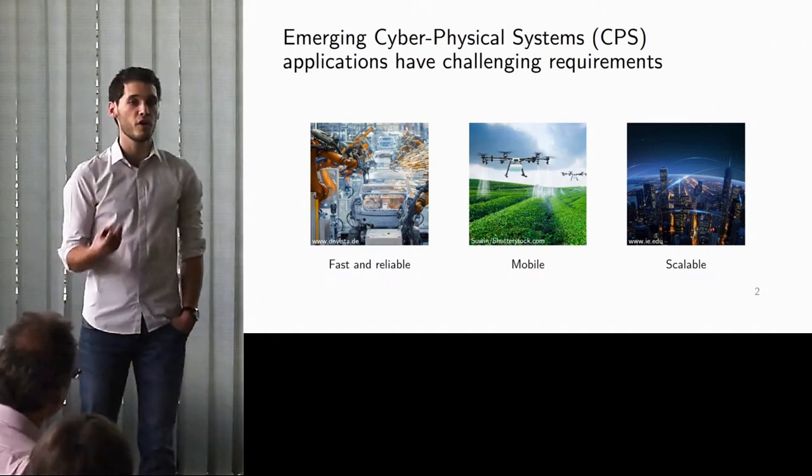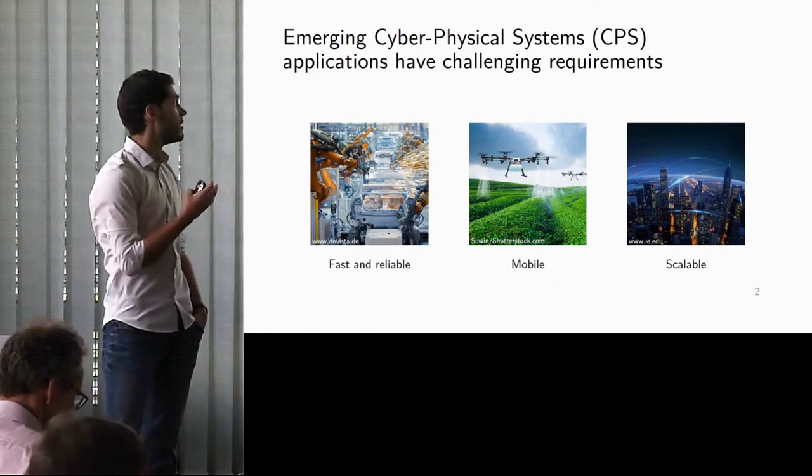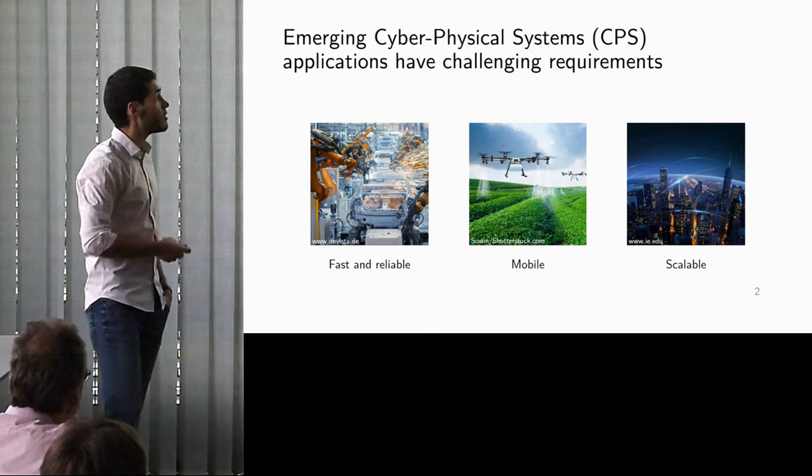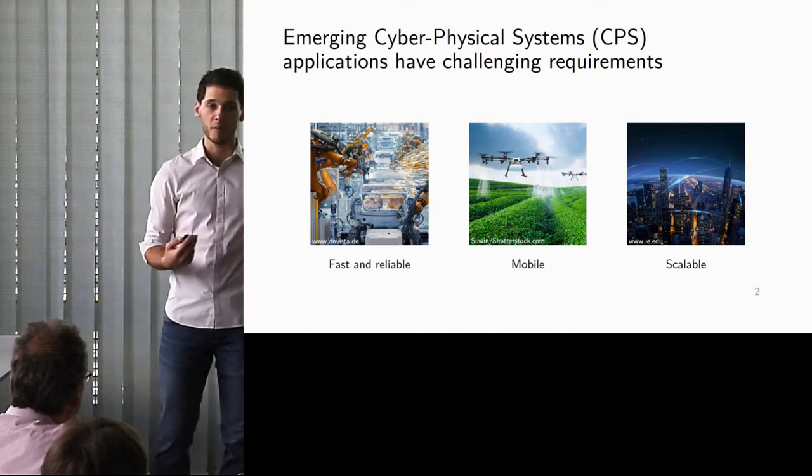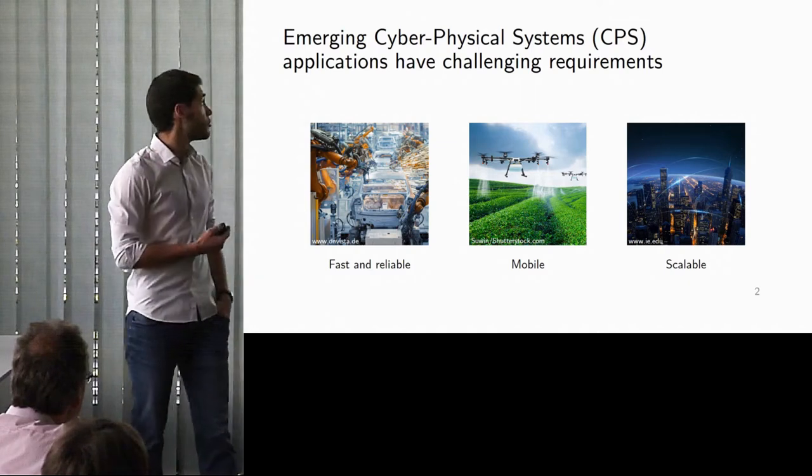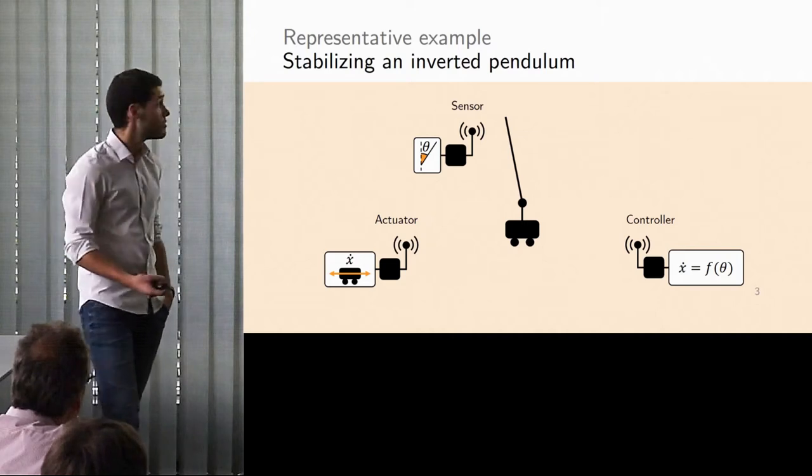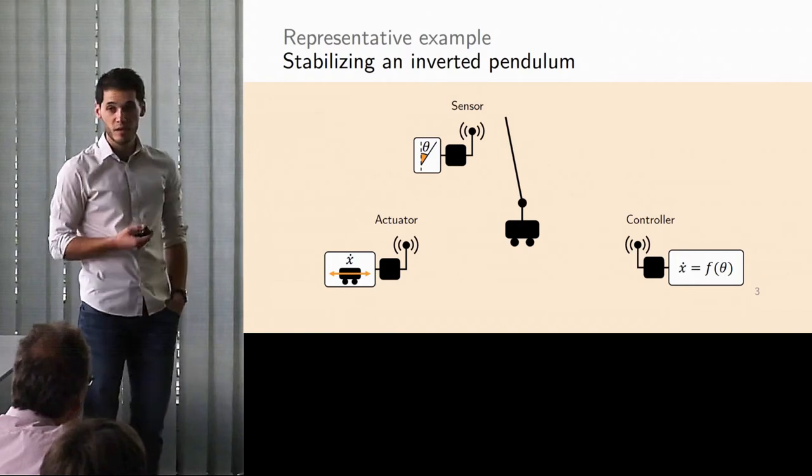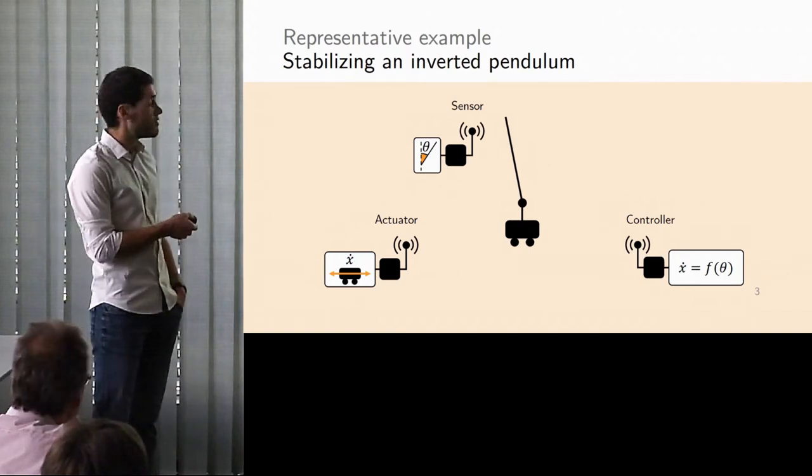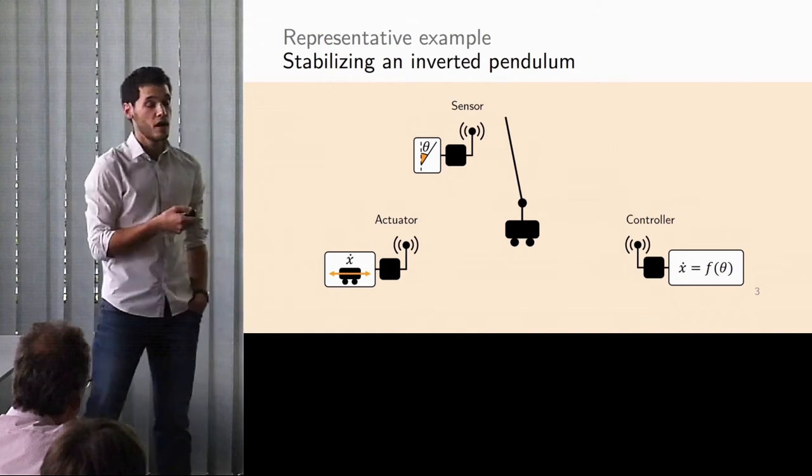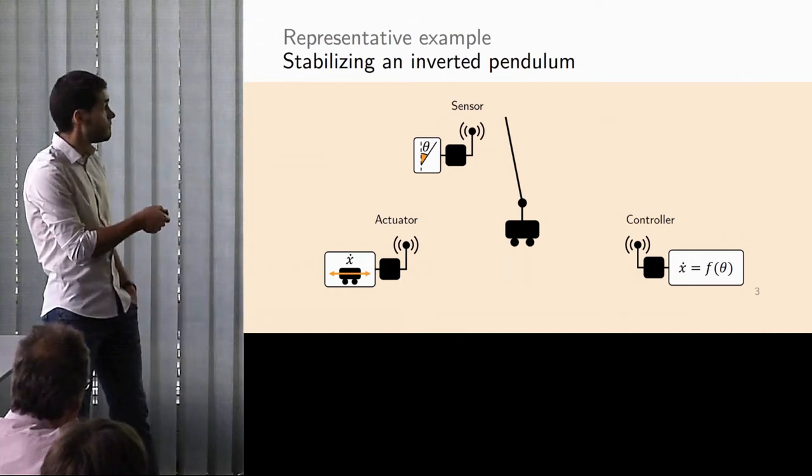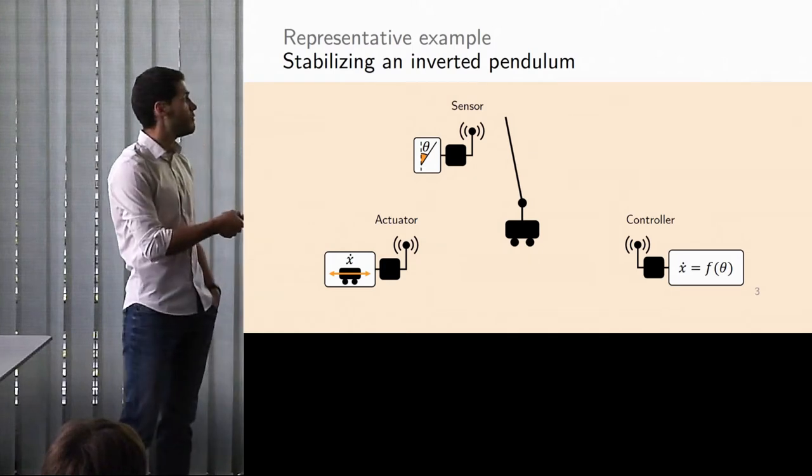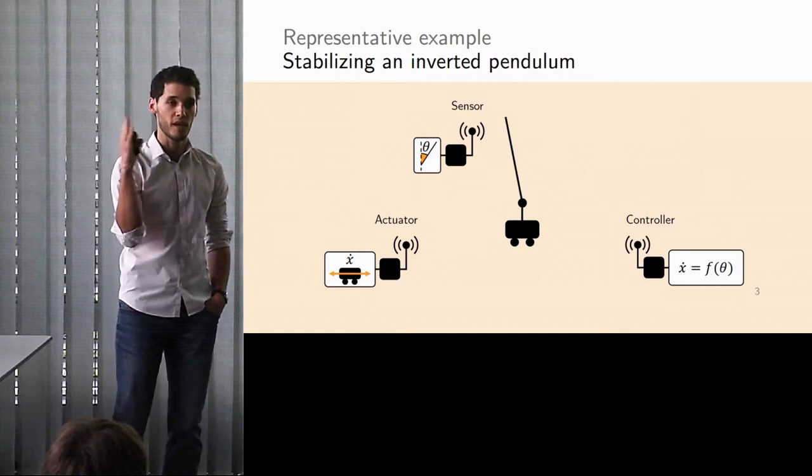Nowadays the type of application we are envisioning for CPS have even more challenging requirements. However, in order to be able to get there, we need to use simpler systems to understand the dynamics of what's happening. One such representative system that we often use in academic research is a so-called inverted pendulum. It is a rather simple mechanical system in which we have a cart here that can move left and right along the rail, on top of which is mounted a pole, which oscillates also left and right, and the goal of the game is to move the cart left and right in order to keep the pendulum stabilized upright.